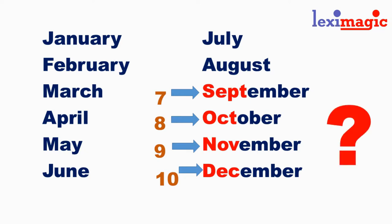But wait a minute — the numbers seven, eight, nine, and ten seem to be incorrect for these months, because they are actually month number nine, ten, eleven, and twelve. What happened?